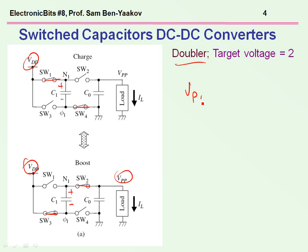So VPP is VC1 plus VDD, and VC1 is VDD, so the output voltage is going to be twice the input voltage, so this is a doubler.